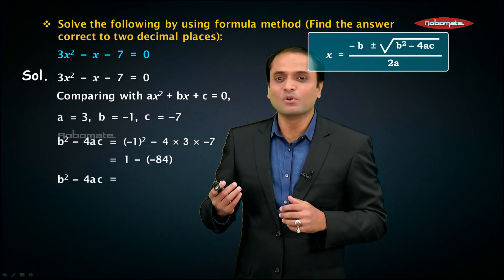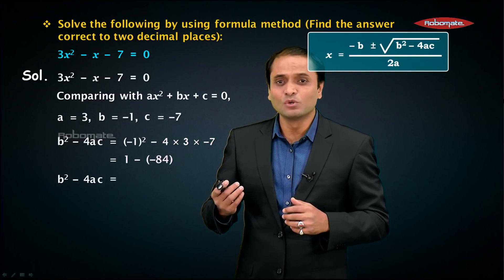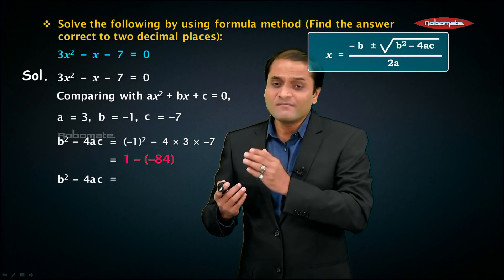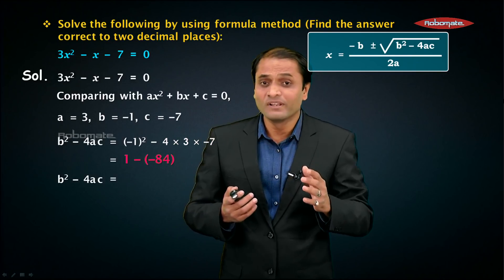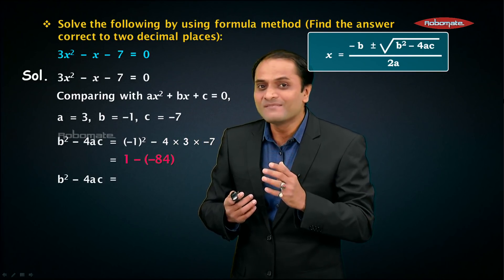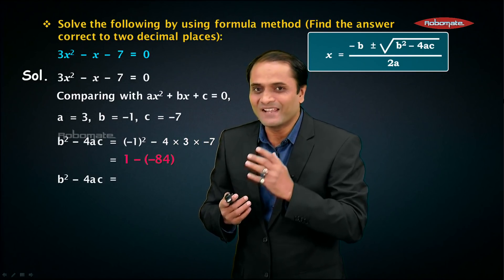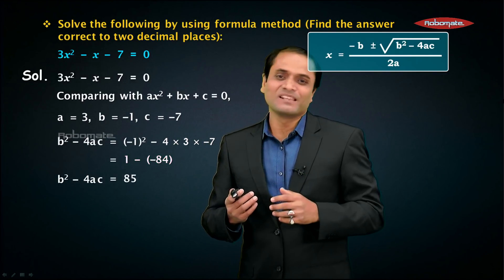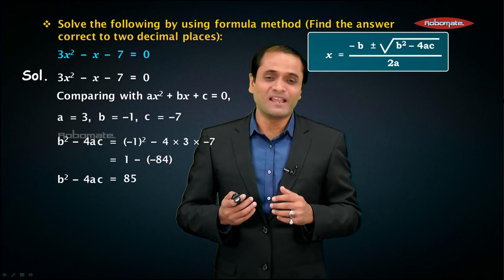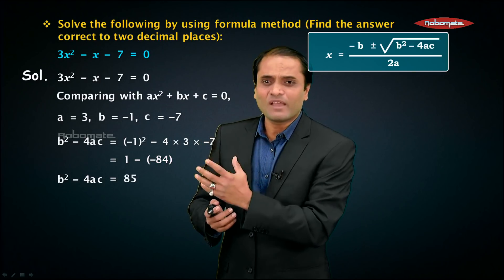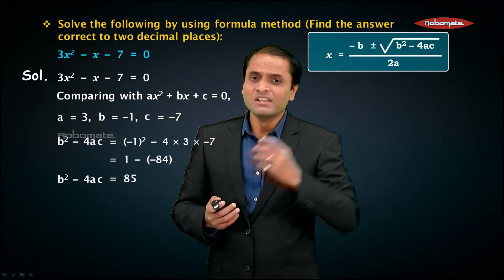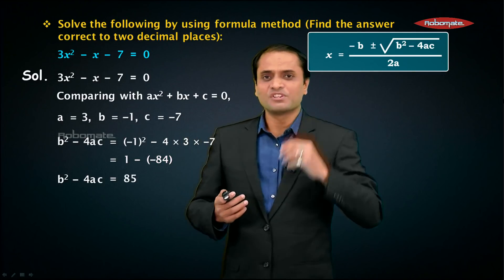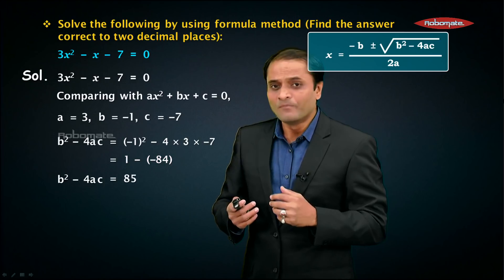In the next step, this becomes 1 - (-84), which means 1 + 84 = 85. So the value of b² - 4ac is 85, which we are going to substitute in the formula.